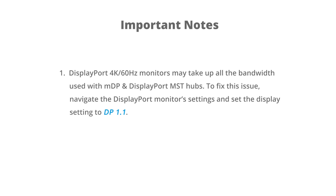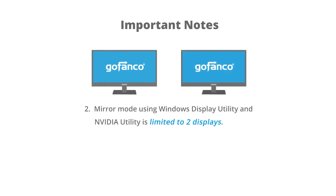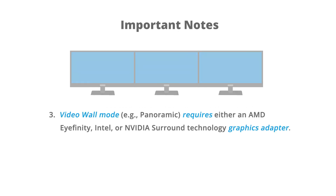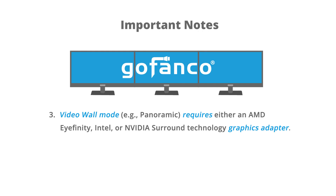Important Notes: DisplayPort 4K 60Hz monitors may take up all the bandwidth used with the MDP and DisplayPort MST hubs. To fix this issue, navigate the DisplayPort's monitor settings and set the display setting to DP 1.1. Mirror Mode using Window Display Utility and NVIDIA Utility is limited to two displays. Video Wall Mode, such as panoramic, requires either an AMD Affinity, Intel, or NVIDIA Surround technology graphics adapter.